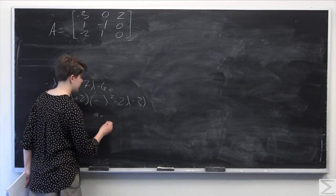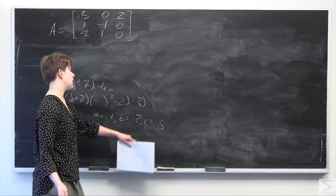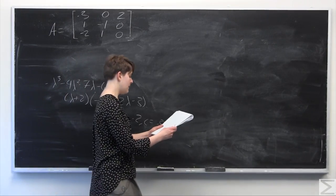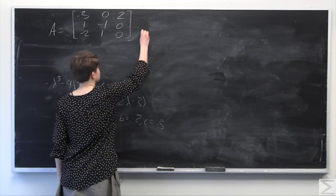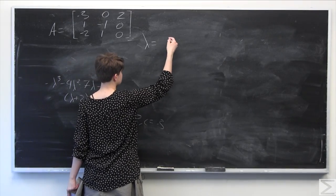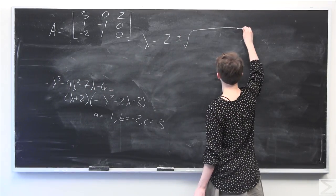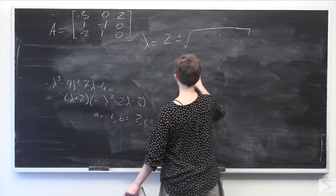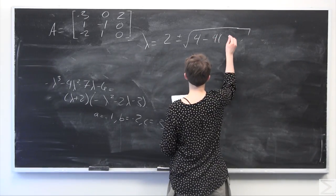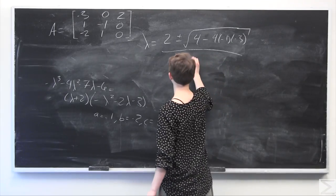We'll use the quadratic formula. The coefficients are A equals negative 1, B equals negative 2, and C equals negative 3. So lambda equals opposite B — which is negative 2 times negative 1, giving 2 — plus or minus the square root of B squared (negative 2 quantity squared equals 4) minus 4 times negative 1 times negative 3, all over 2 times A, which is 2 times negative 1, giving negative 2.